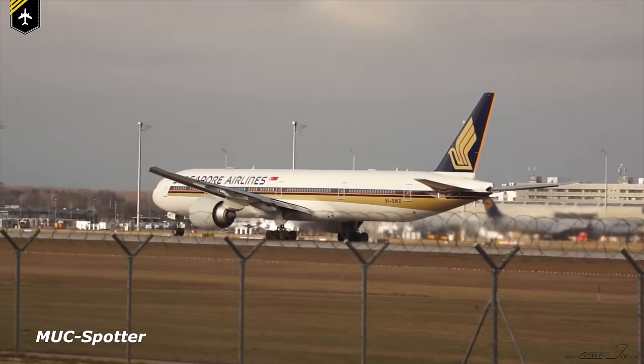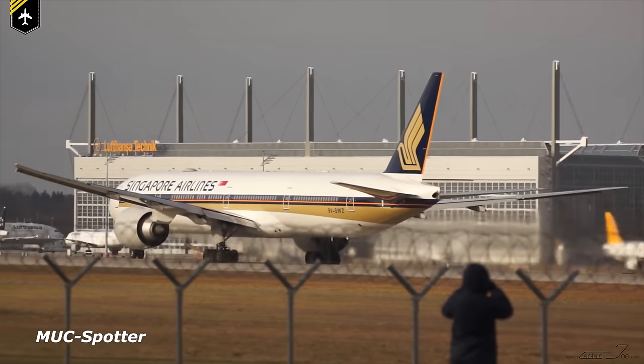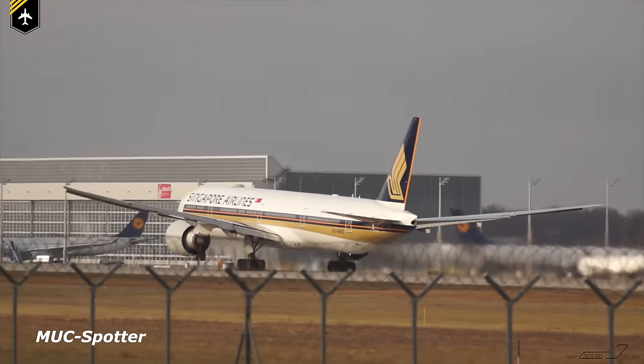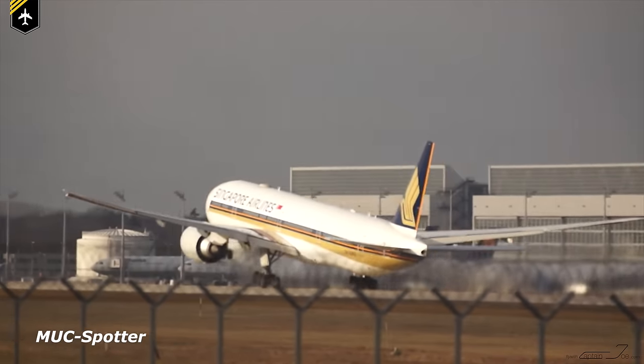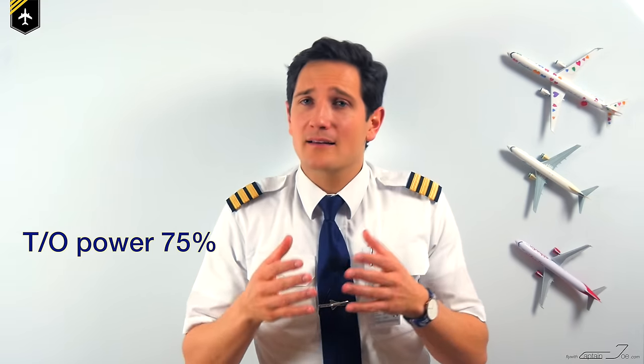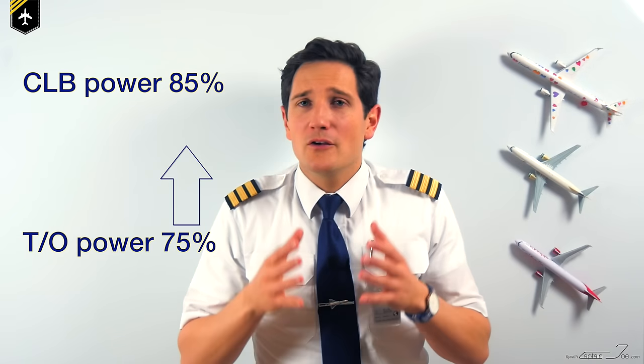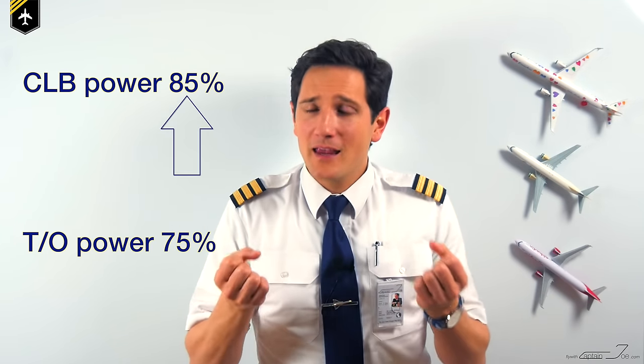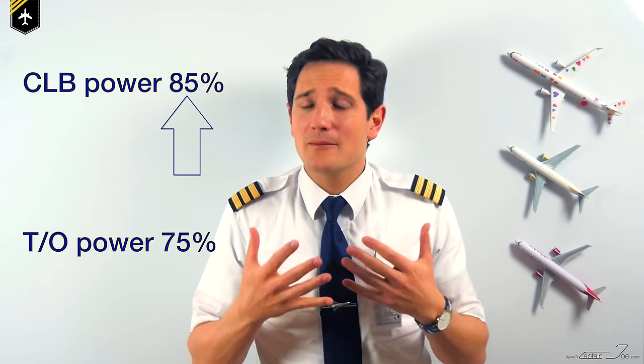Maybe you've experienced this: you're sitting in a Boeing and as you gently lift up into the air and reach the thrust reduction altitude, suddenly more power is applied. On some Boeing takeoffs, the thrust for the takeoff is reduced even below the climb thrust. So let's say de-rated power is 75% and the climb power is at 85% — you can feel and hear the increase of those 10% in power at the thrust reduction altitude.